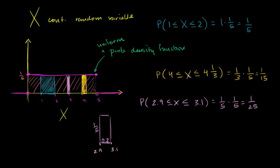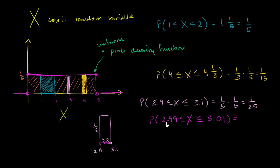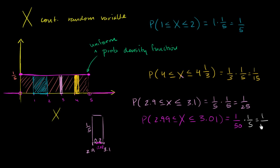What's the probability that 2.99 is less than or equal to our random variable, which is less than or equal to 3.01? We've made our range a little smaller. The base is now 0.02 — the difference between 3.01 and 2.99. So it's now 0.02, or 1/50, times the height 1/5, which gives us 1/250.